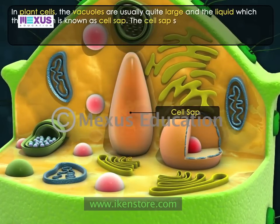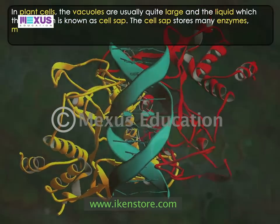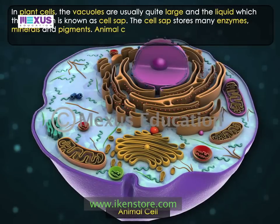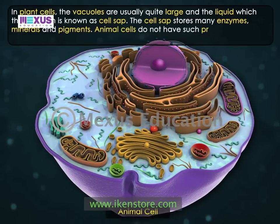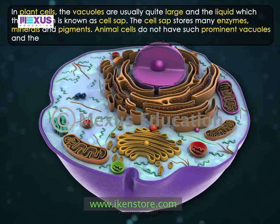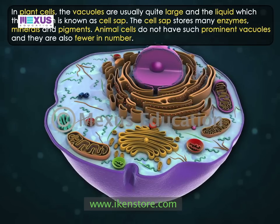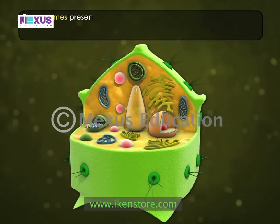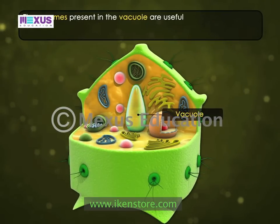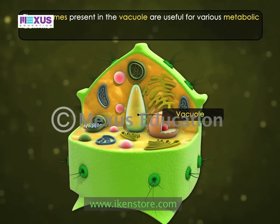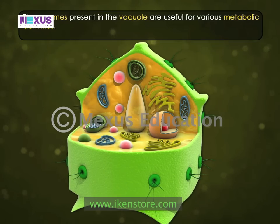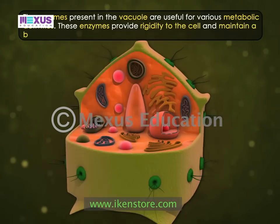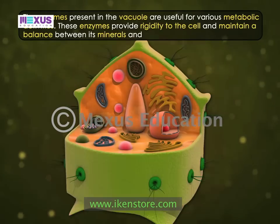The cell sap stores many enzymes, minerals and pigments. Animal cells do not have such prominent vacuoles and there are also fewer in number. The enzymes present in the vacuole are useful for various metabolic activities. These enzymes provide rigidity to the cell and maintain a balance between its minerals and water.